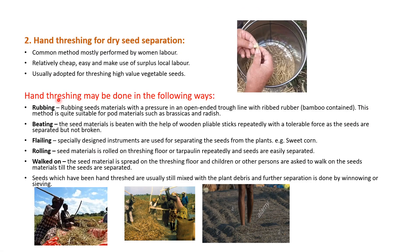The next method for dry seed separation is hand threshing, which is the most common method. It is performed with the help of local labor because it is cheap, easy, and can be used on a large scale. It is also used when the seed material is of high value, as it ensures no damage is done to the seeds.